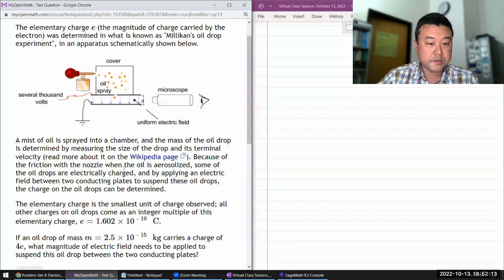Because of the friction with the nozzle as the oil is aerosolized, some of the oil drops are charged by applying an electric field. These oils are charged. In this region, there's no electric field on them. They behave like they are neutral. But once they drop here, they are influenced by electric field.